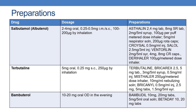Now coming to the various preparations. The first is salbutamol, also called albuterol. Coming to the dosage, it is available in 2 to 4 mg oral, or 0.25 to 0.5 mg intramuscular or subcutaneous, or 100 to 200 mcg by inhalation.